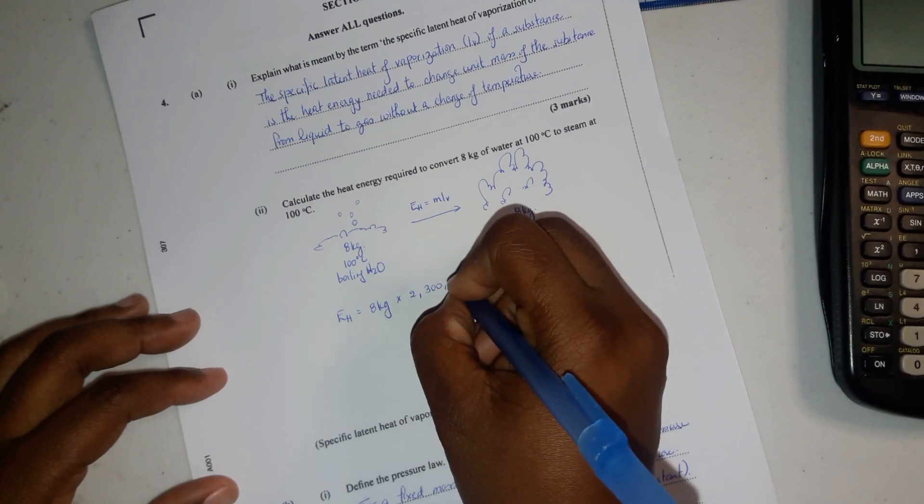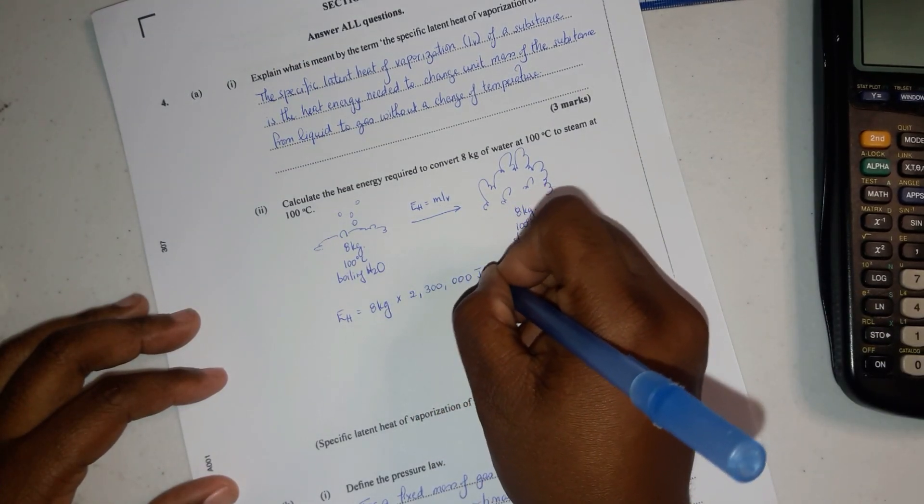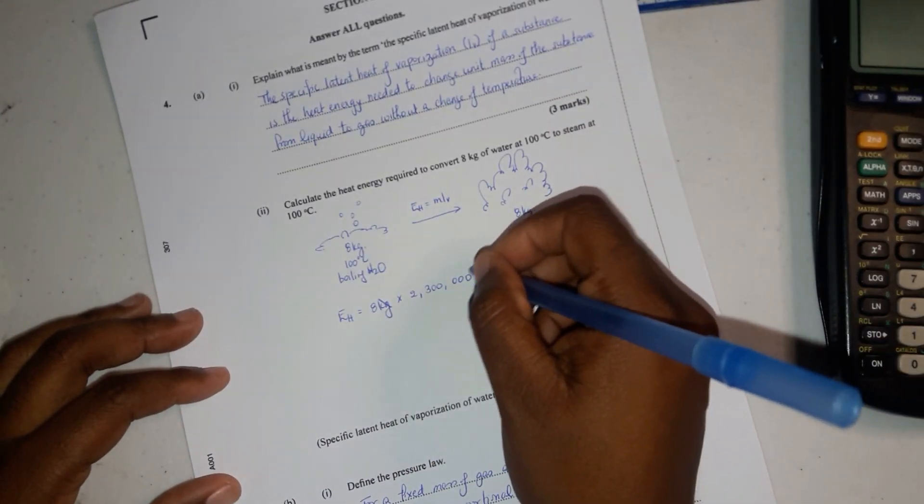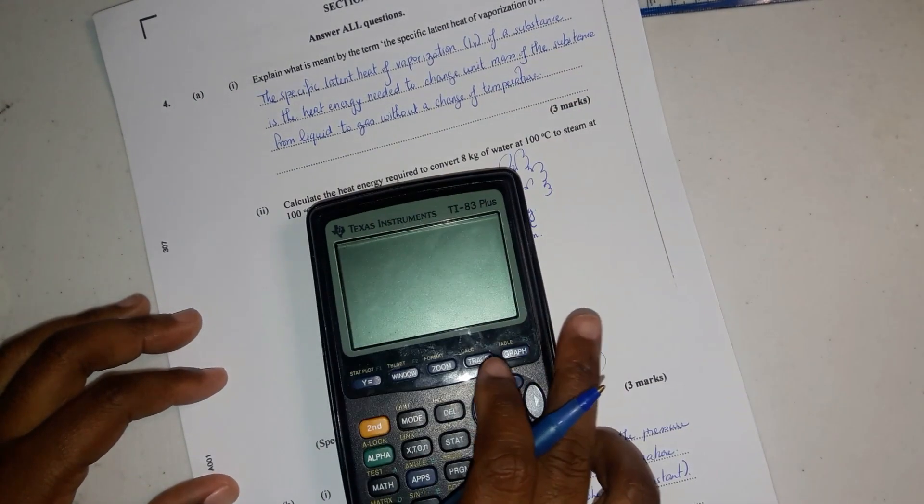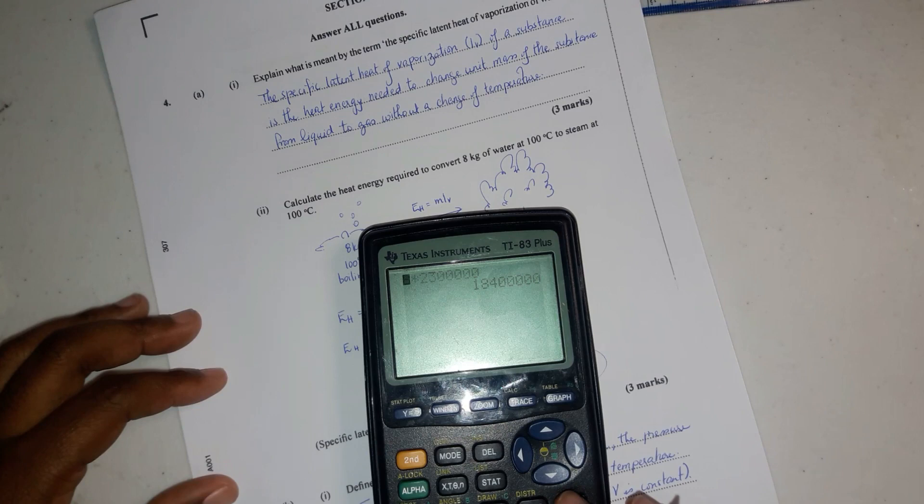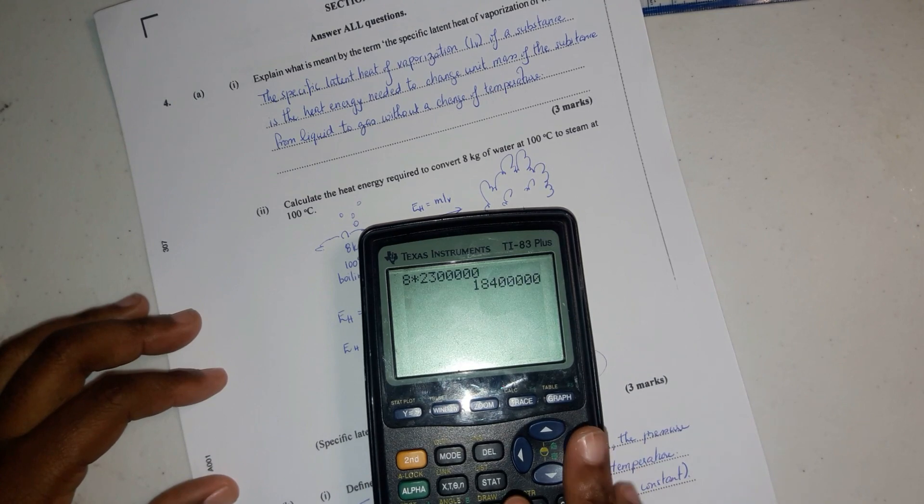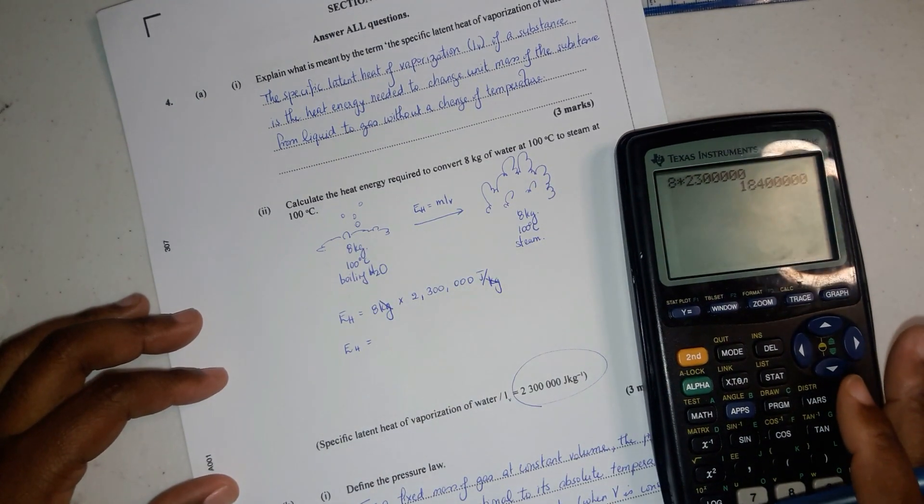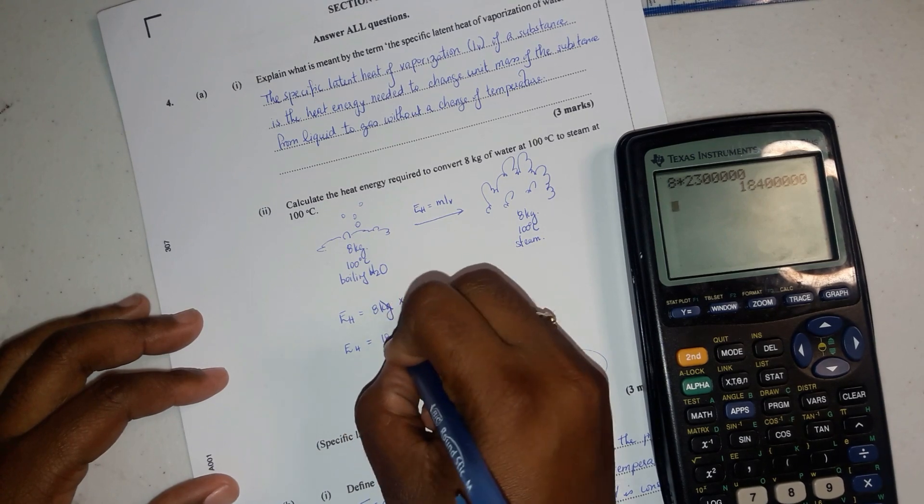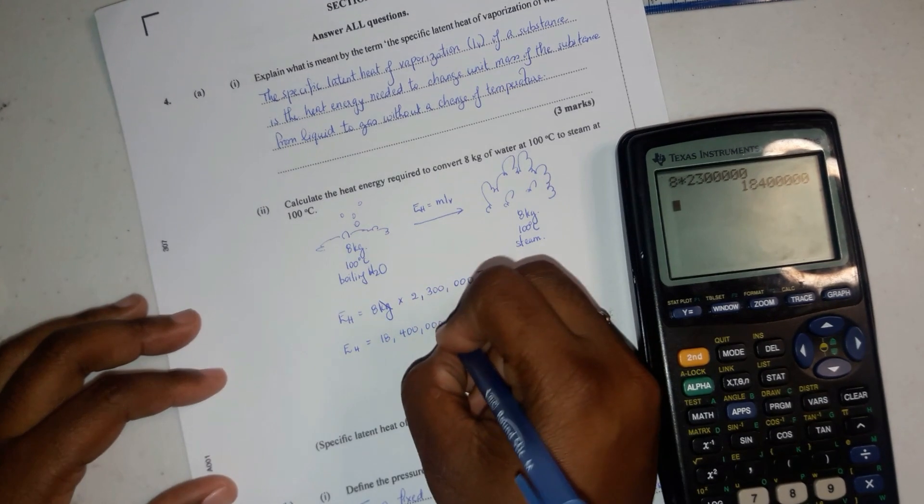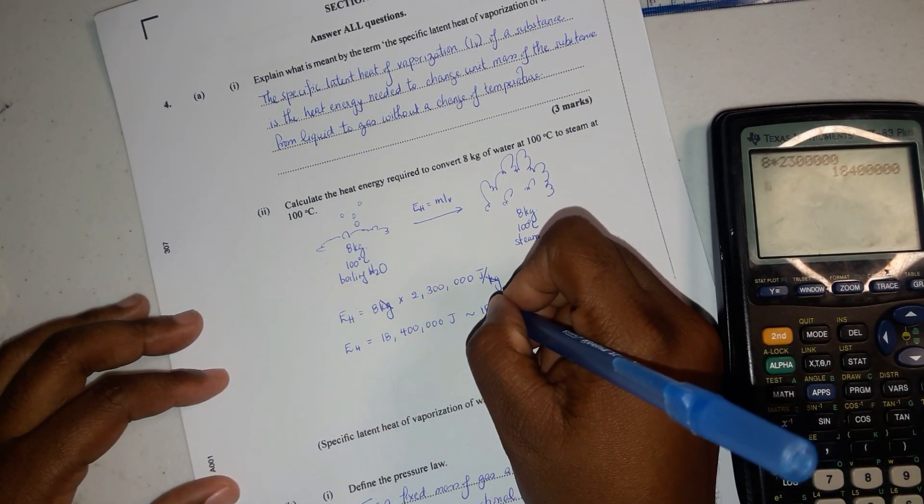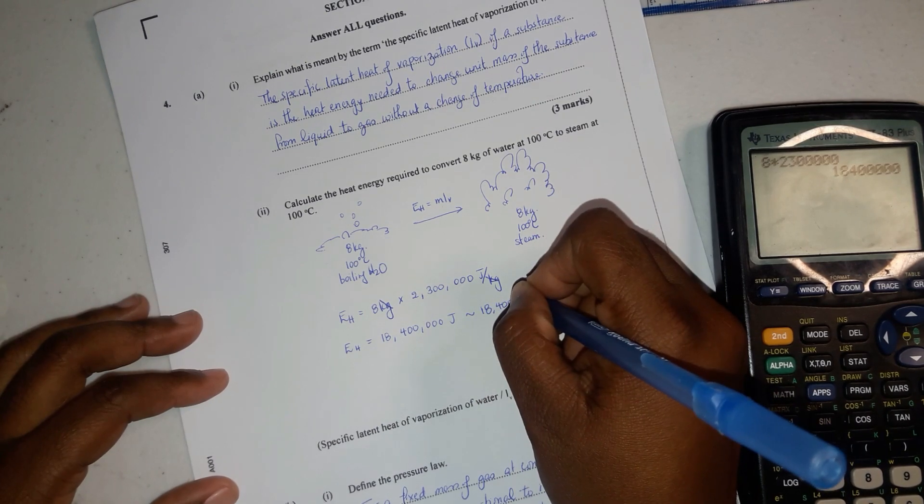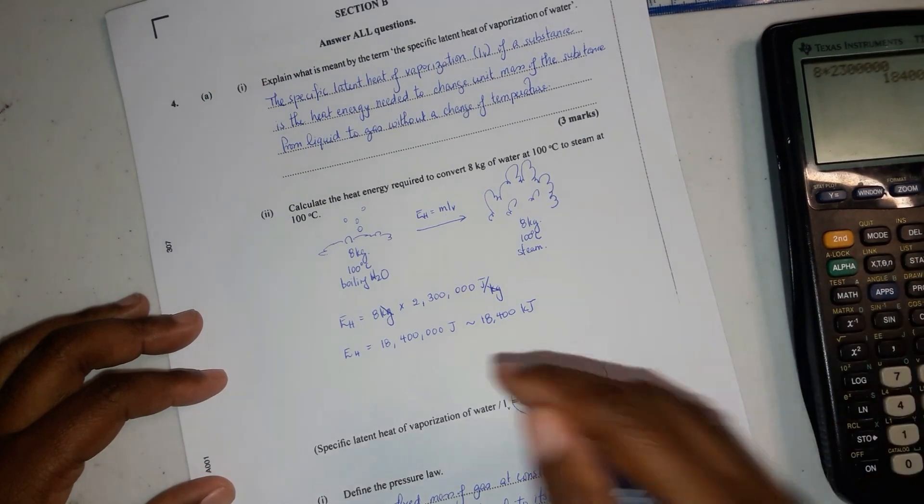You could cancel them out and you're left back with the correct units. And that should give us 8 times 2,300,000, which is 18,400,000 joules, which would be equivalent to 18,400 kilojoules.